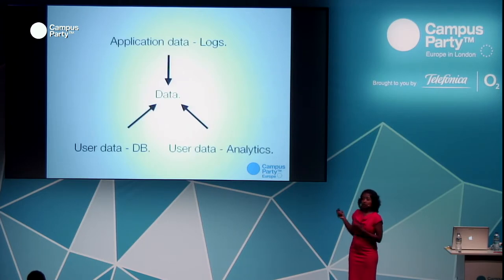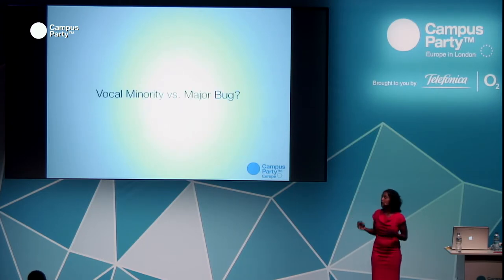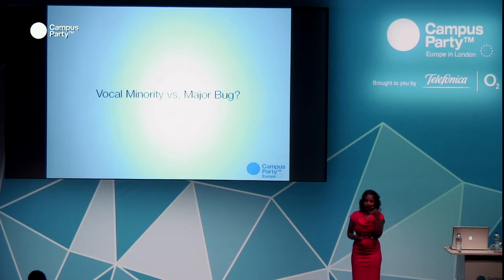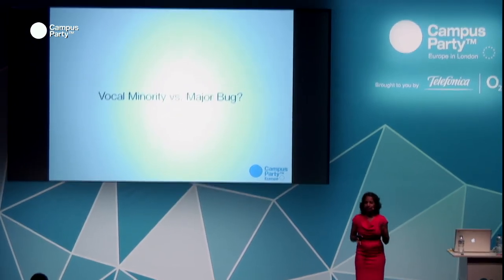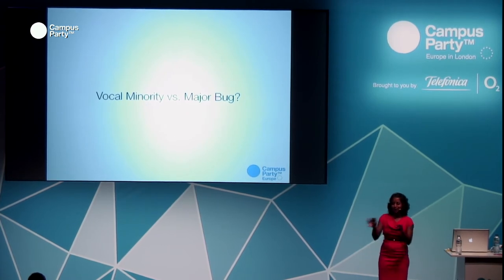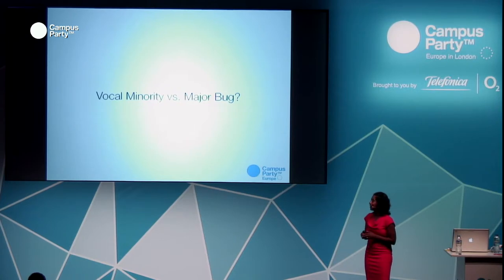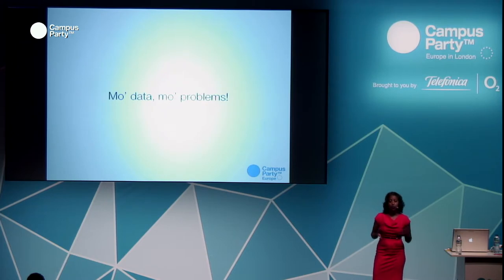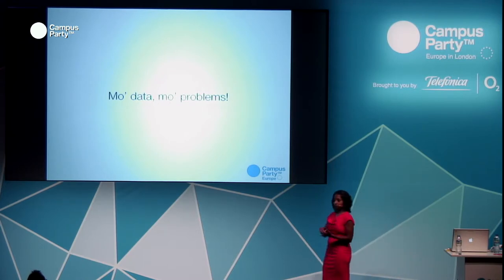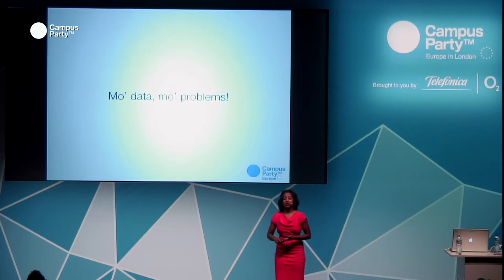These multiple data sources matter because users will complain about the product. They'll call and say a feature isn't working — and sometimes people will be very vocal. But then you'll look through the user data or analytics and find only five people were affected out of five million. Do you really want to spend your time satisfying those five people? Maybe if you're B2B and those five customers are essential, but often you want to figure out if a bug is causing a major impact. The more data you have, the more problems you actually have: storage, capacity, security, cost, and retrieval.